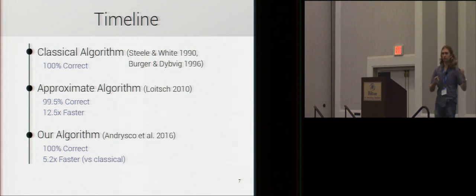All right, so, I'm going to use a timeline, and it will serve as our outline for this talk. So, up here, we'll start with the classical algorithm, and this was by Steele and White in 1990. And the main key aspect of this algorithm was that it was 100% correct. It always produced the correct output, but it wasn't very fast. Then, in 2010, Florian Loesch made an approximate algorithm, which was 99.5% correct. But, it was 12 and a half times faster. And so, essentially, by losing a little bit of correctness, he was able to create an algorithm that far, far outperformed the previous algorithm. And then, lastly, we'll come to our algorithm, which we, again, recover being 100% correct, but we're only 5.2 times faster than the classical algorithm. So, we do lose speed to the approximate algorithm, but we're recovering this 100% correct property.